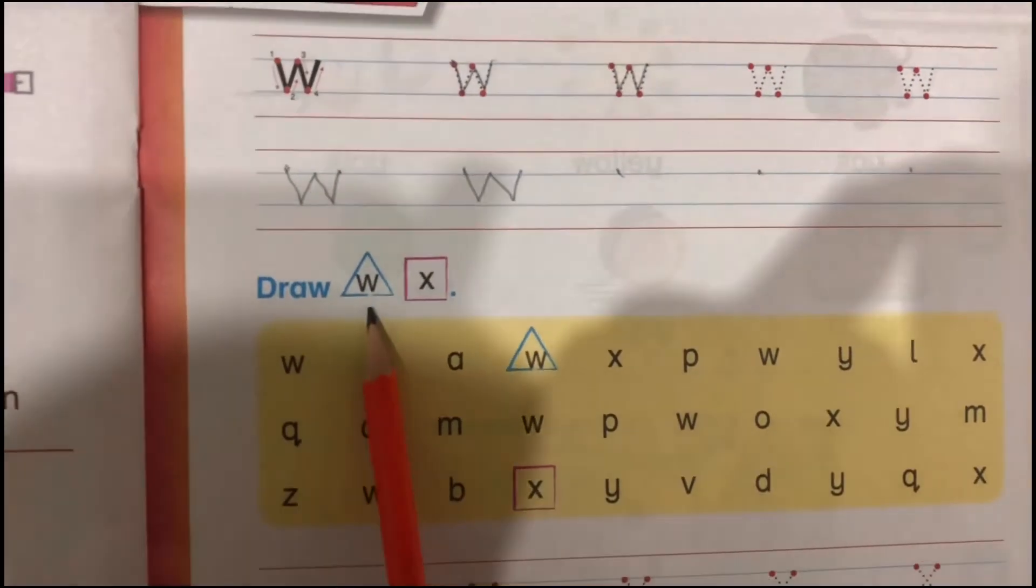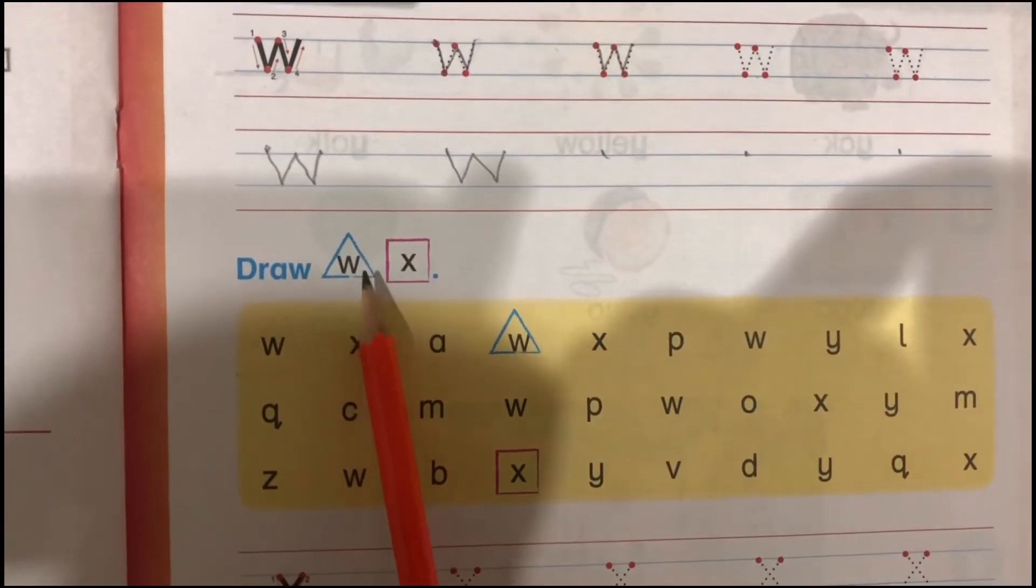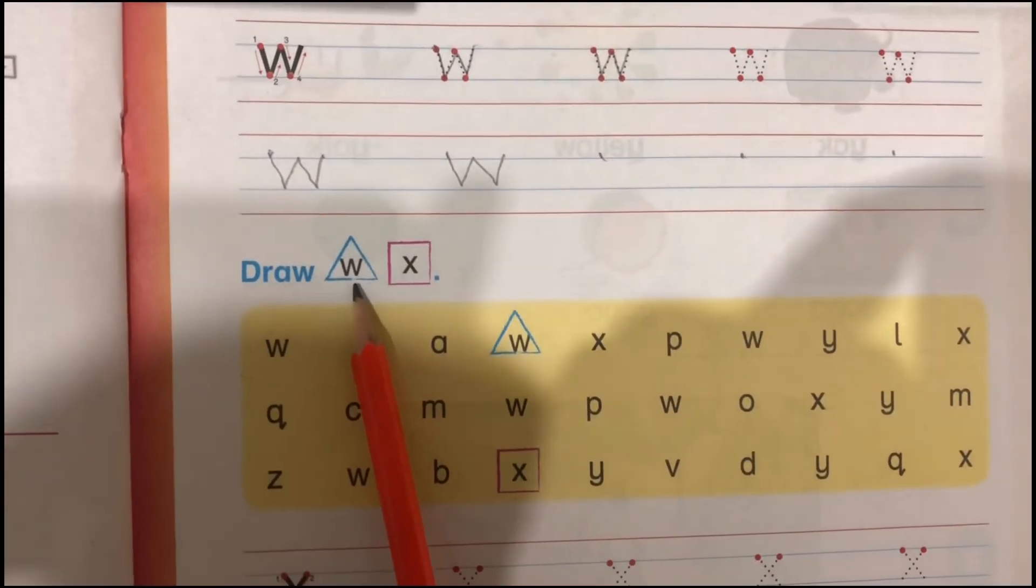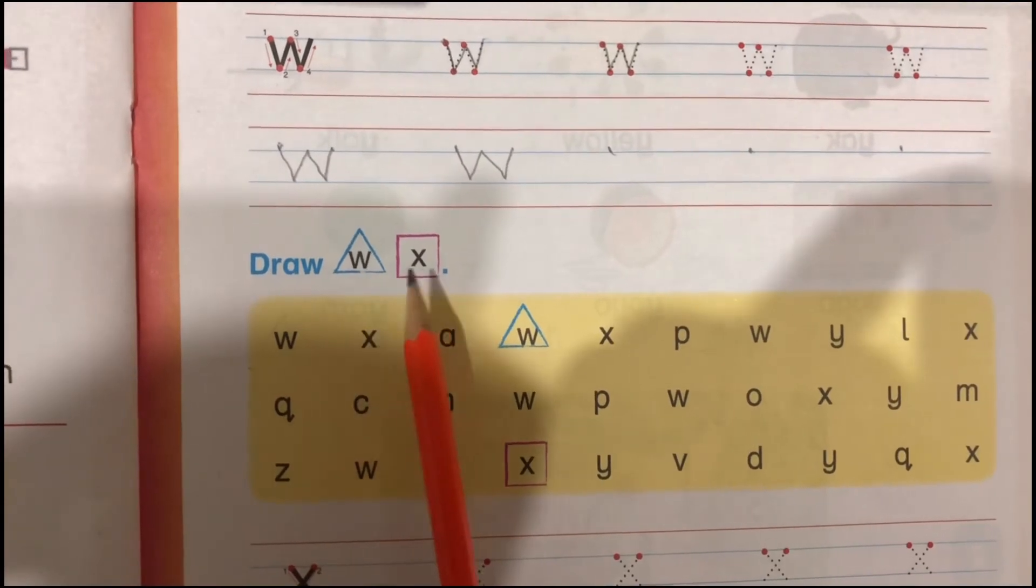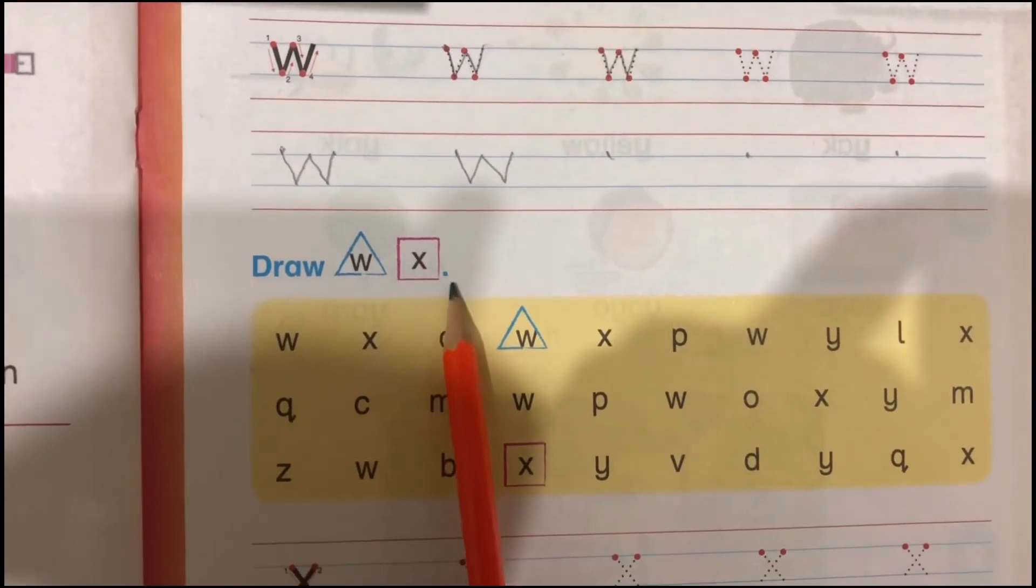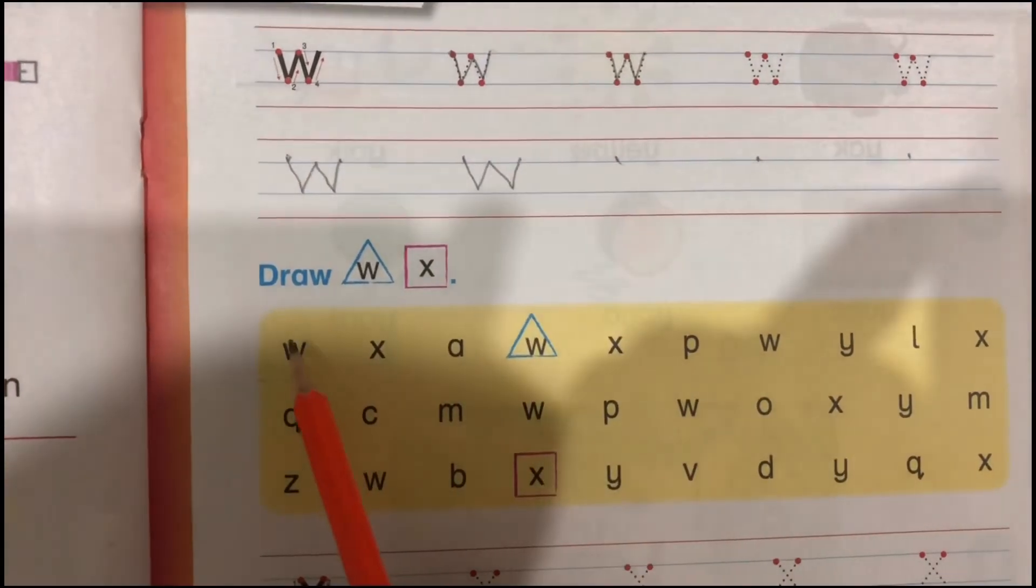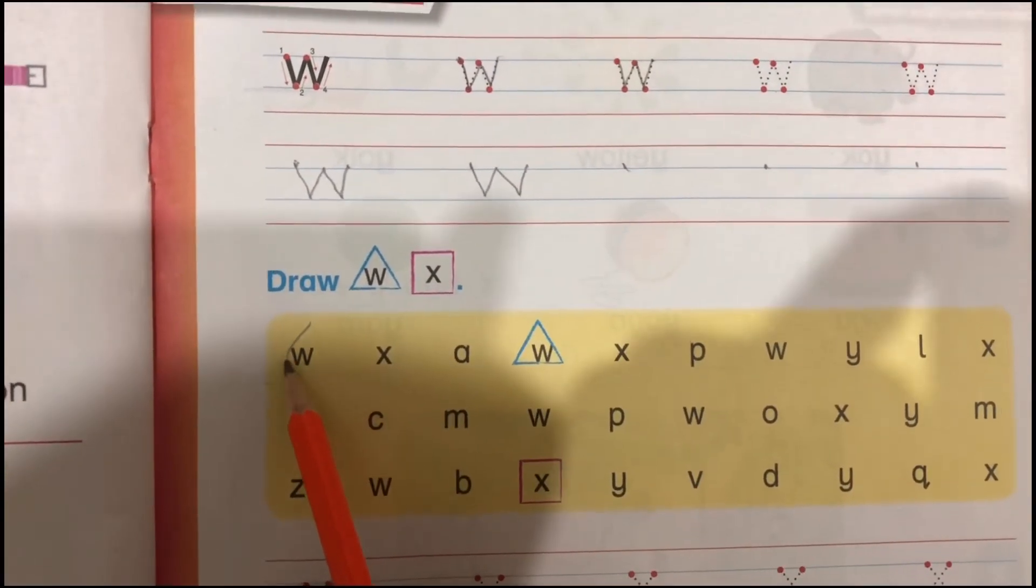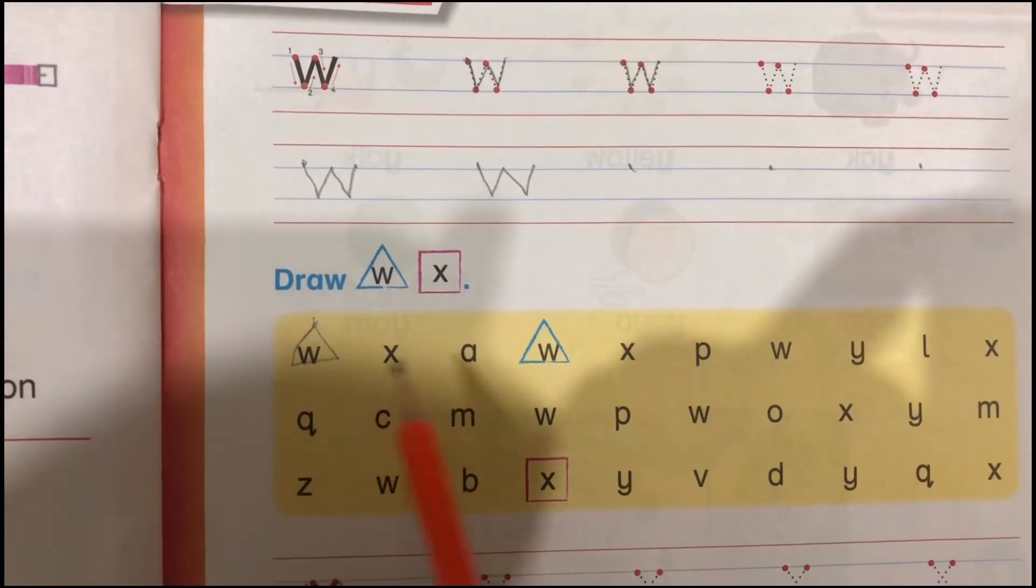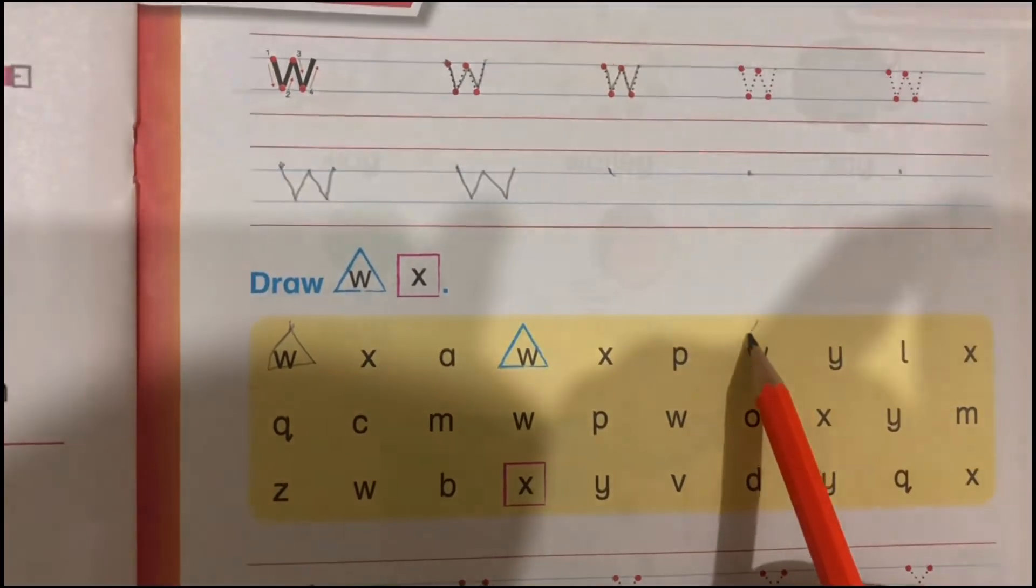Here you can see, you are going to make triangle on each W, W walk, and you will make a square on X. This is our next letter. Here you are going to draw like this, okay?